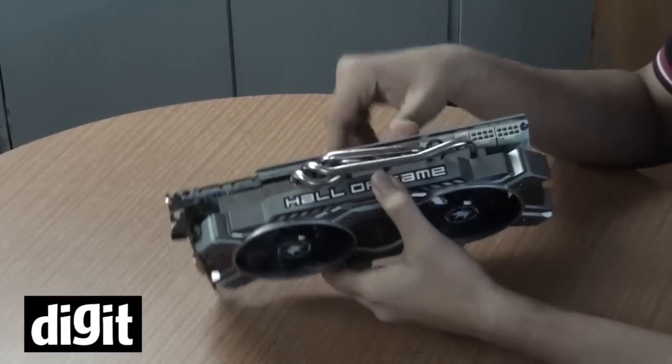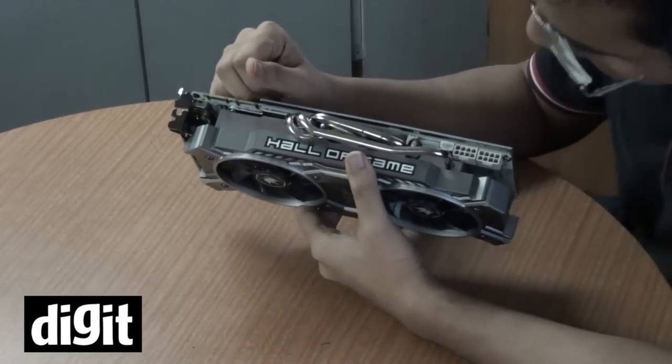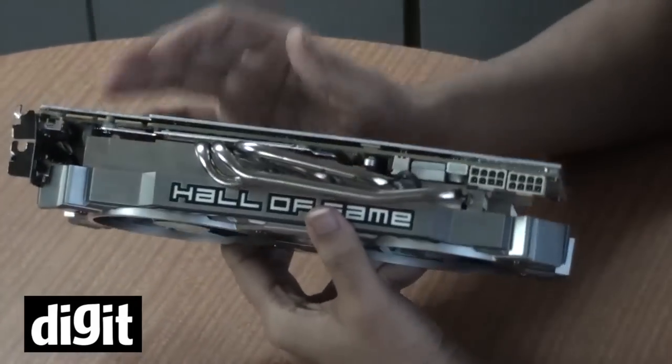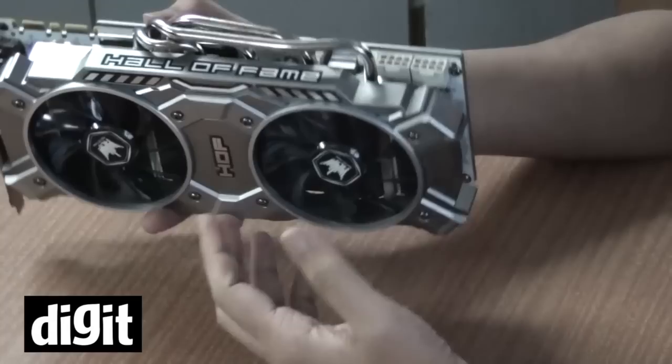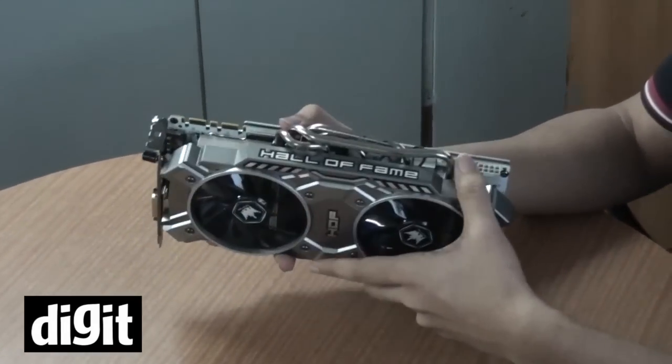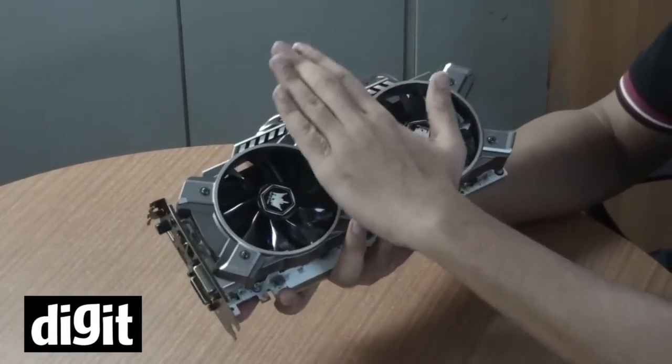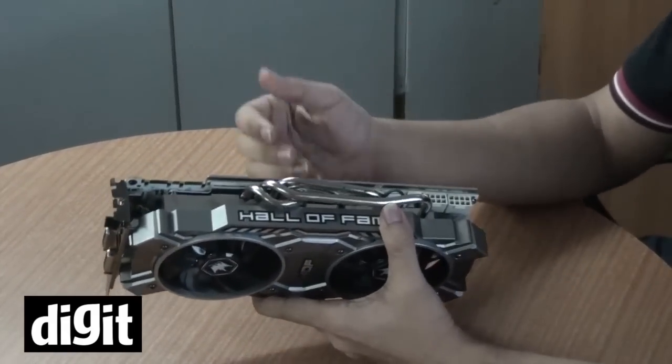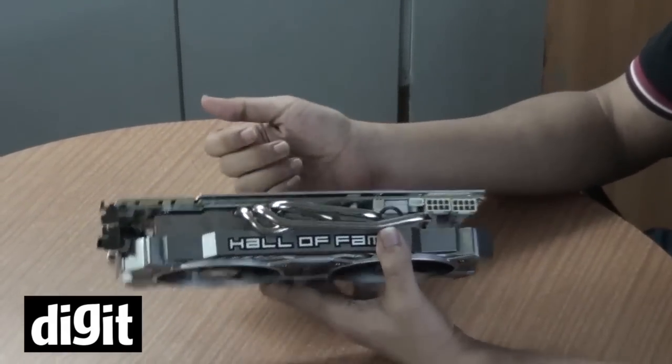There are four heat pipes on the top regarding the hybrid cooling technology that we talked about. It has a vapor chamber that sits on top of the GPU, and on top of the vapor chamber we have these four heat pipes.